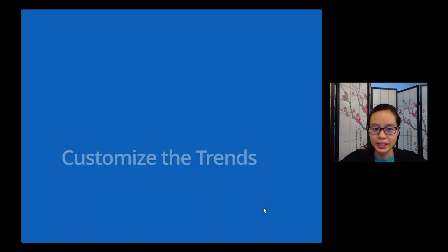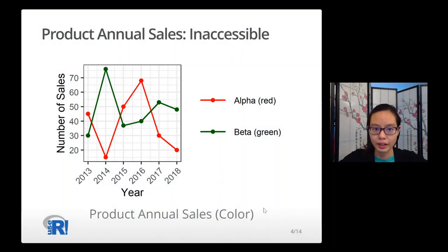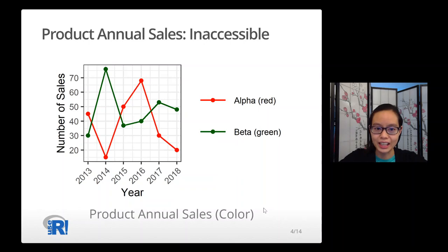Let's see an example of how to customize the trends. We start with a graph of product annual sales with two items, alpha and beta. Alpha is the red trend and beta is the green trend. However, this graph is not accessible because the two trends can be distinguished by only color, so people who cannot see color will have a hard time understanding this graph.